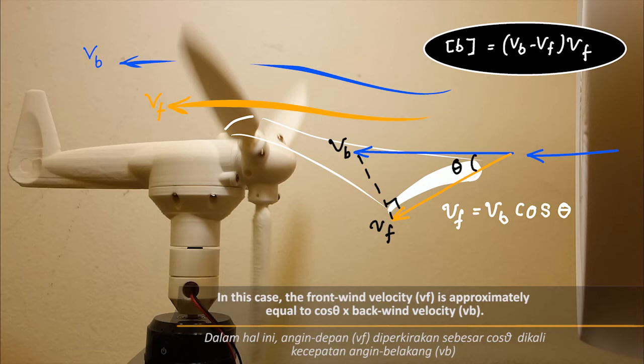In this case, the front wind velocity, Vf, is approximately equal to cos theta times back wind velocity, Vb.